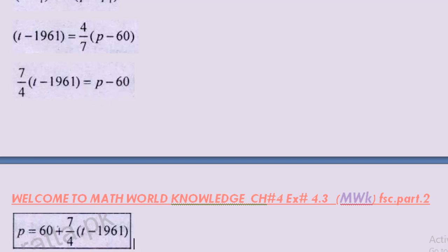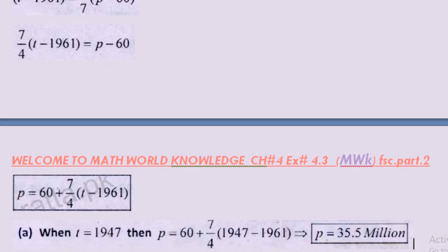Uske baad ab dekhna yeh hai kab humne first part find karna hai when t is equal to 1947. Aur p ki value kya hogi? Yeh value humne iske andar substitute ki: p = 60 plus 7/4 into (t minus 1961), here t is 1947. Isko simplify karne se hamare paas answer aaya 35.5 million.